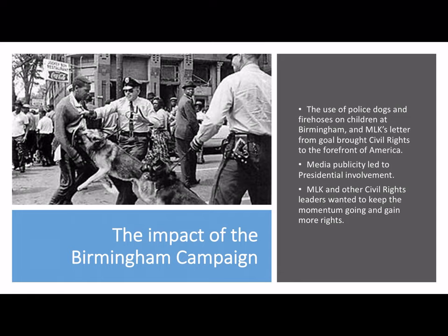This happened just after the Birmingham campaign, where due to the use of police dogs and fire hoses which had been used on protesters at Birmingham — with some as young as six — as well as Martin Luther King's letter from Birmingham jail, civil rights was once more at the forefront of American thought. The media publicity had even led to the involvement of the President, so Martin Luther King and the other civil rights leaders were determined to keep the momentum going in the hope that they would get more rights and equality for African Americans.